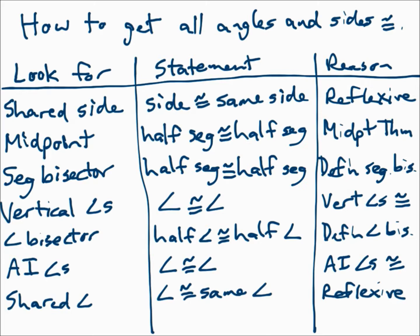How do you get all angles and sides congruent? Well, you're not always given all the information you need, but there are things to look for to get the extra pieces. Pause the video and jot this chart down because it will be extremely useful for getting the other pieces. It tells you what to look for, the statement you will make in the proof, and the reason for making that statement.